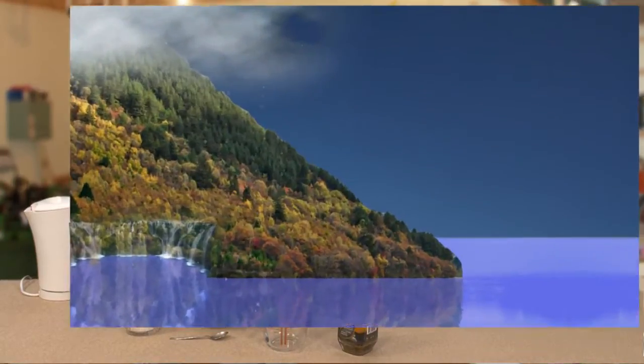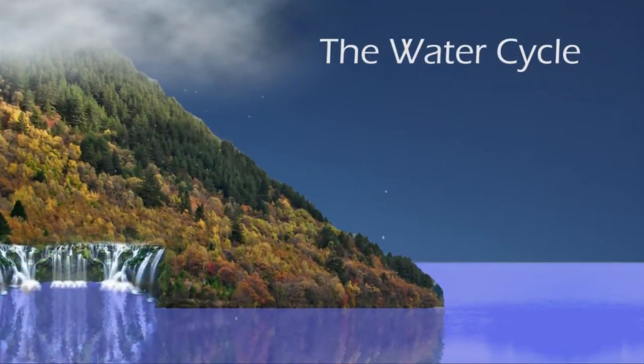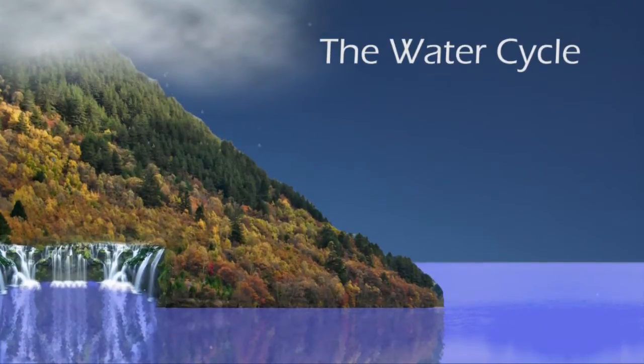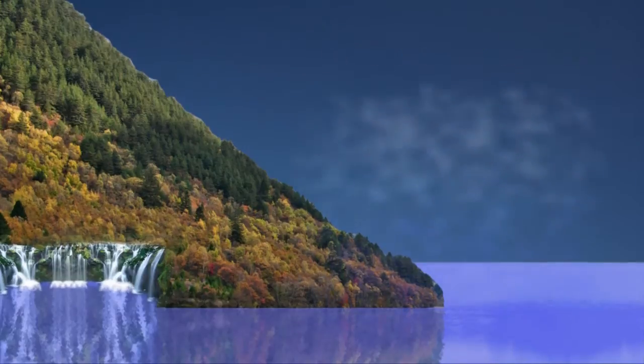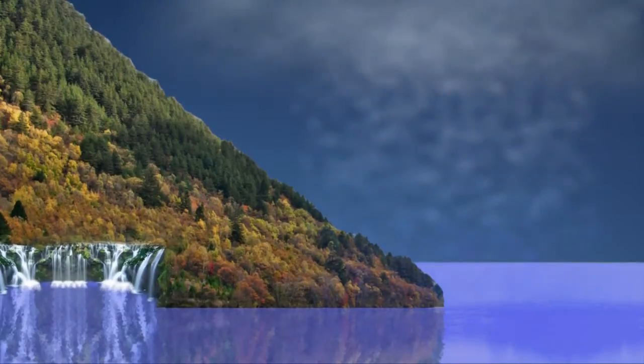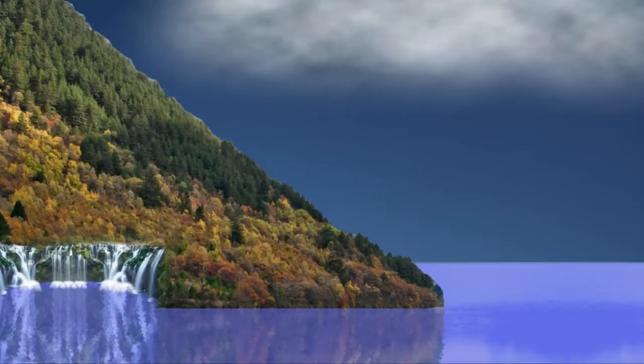We were taught it at school—the diagram of rain falling, collecting into lakes and seas, and then evaporating into water vapor, rising into the atmosphere, condensing because of the cold, collecting into clouds, and then falling as rain again.